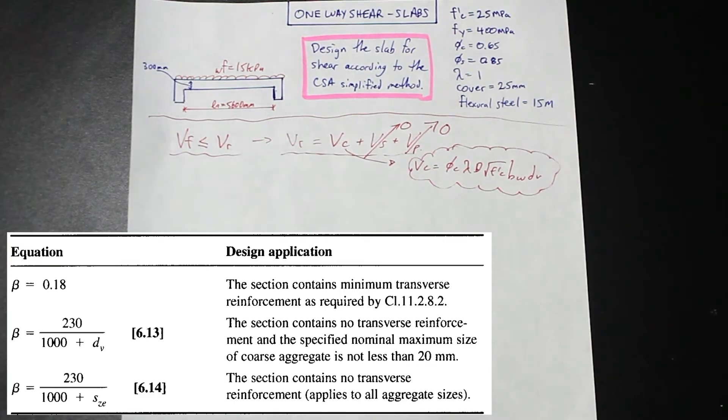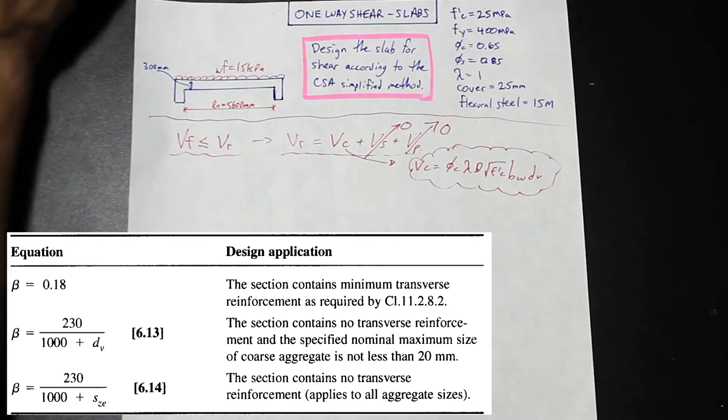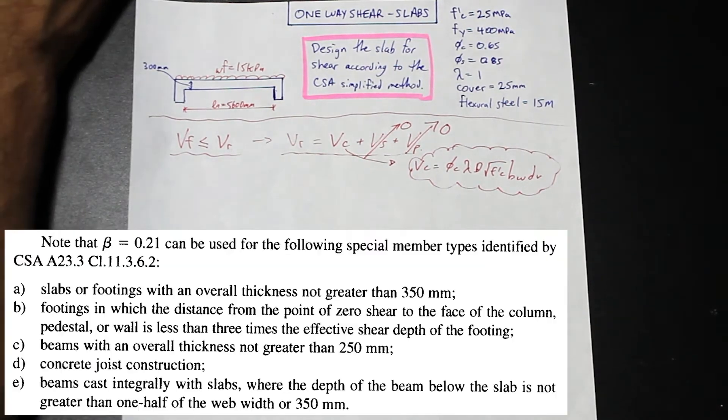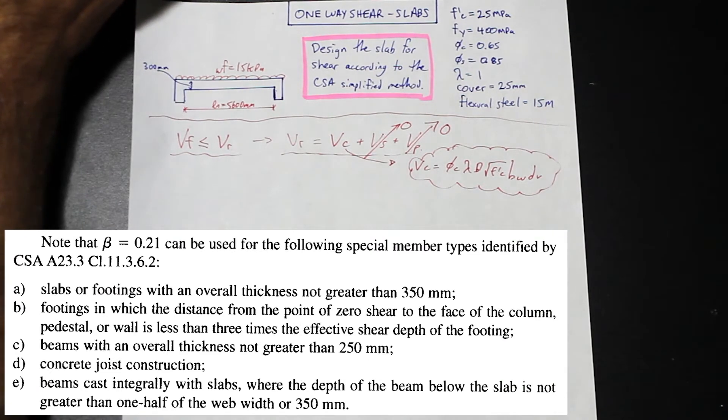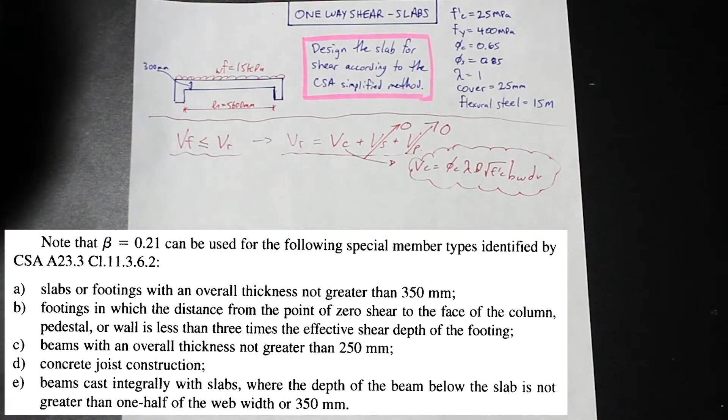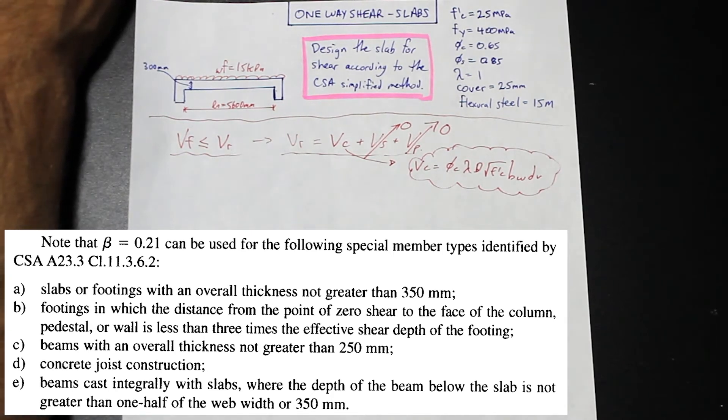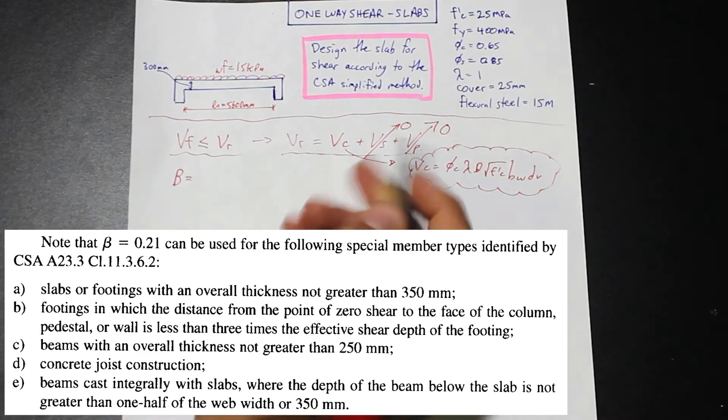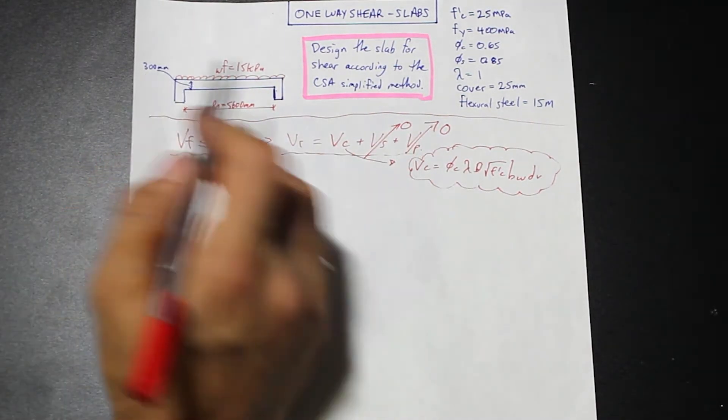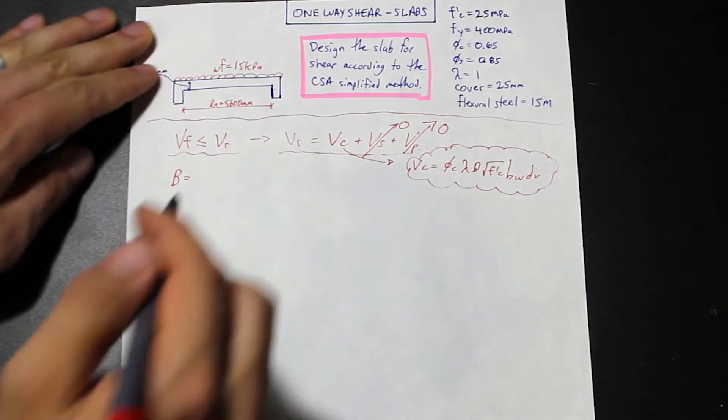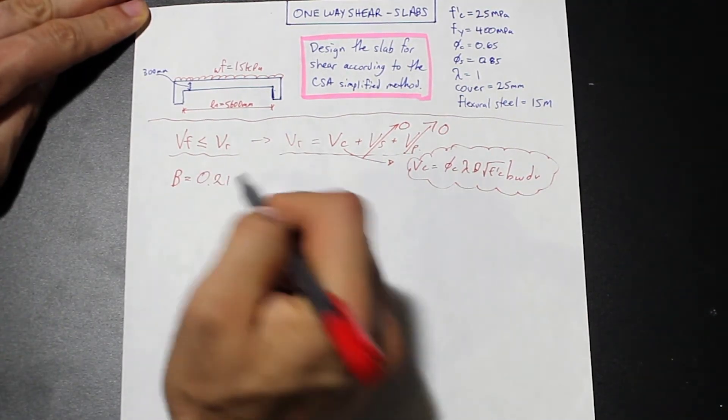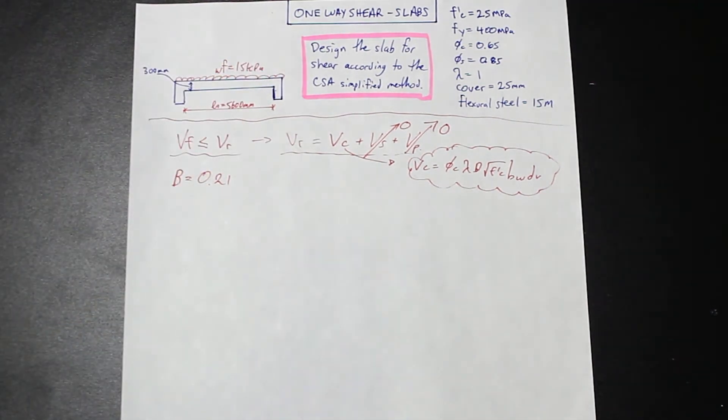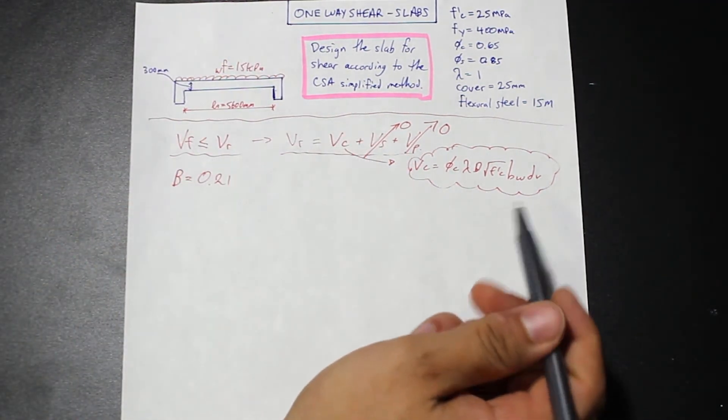The last one applies to if we're using a smaller aggregate size. There are some special member types where beta is allowed to be taken as 0.21. Here's a little list: slabs or footings with an overall thickness not greater than 350, et cetera. As you can see, A applies to us. Since our slab is less than 350, we have a 300 millimeter slab, we're going to take the value for beta as 0.21, which is good. This is an increase in our shear resistance. If we have to use the formula, we're going to get less than this. Beta equals 0.21.